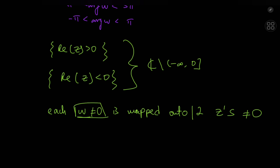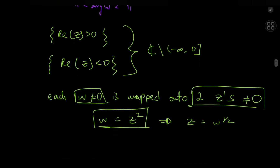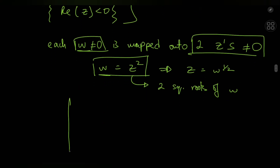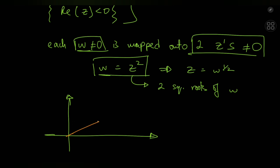The mapping of both open half-planes onto the exact same set — the slit plane — allows us to conclude that each non-zero w is mapped onto exactly two non-zero z's. So the mapping w = z² is not injective. If it's not injective, this implies that the inverse mapping z = w^(1/2) is multivalued, which is equivalent to saying there are two square roots of w. We just saw this visually, and we can also see it analytically by considering two complex numbers z and z' of equal absolute value, where you get from z to z' by rotating clockwise by π radians.